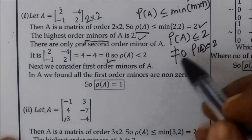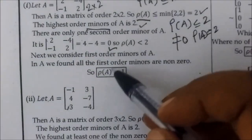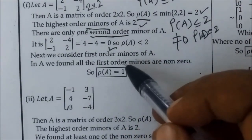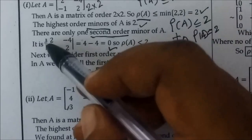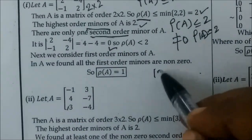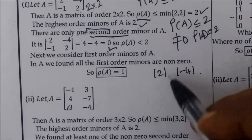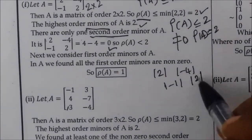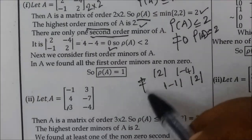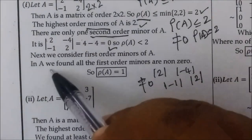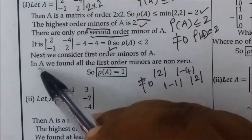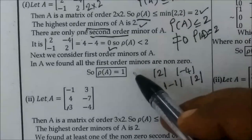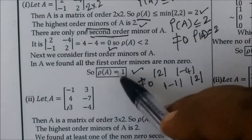The second order is the highest order. So how do we go to the first-order minor? The first-order minor values are: 2, then minus 4, then minus 1, then 2. We found all the first-order minors are non-zero. So rho of A is equal to 1.